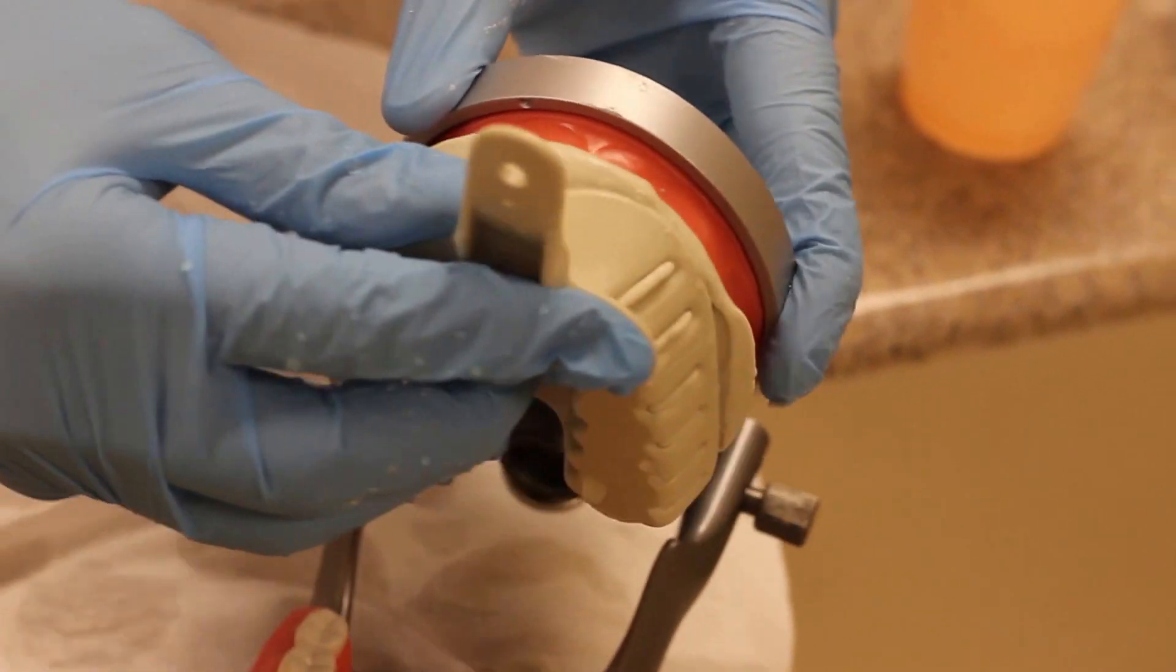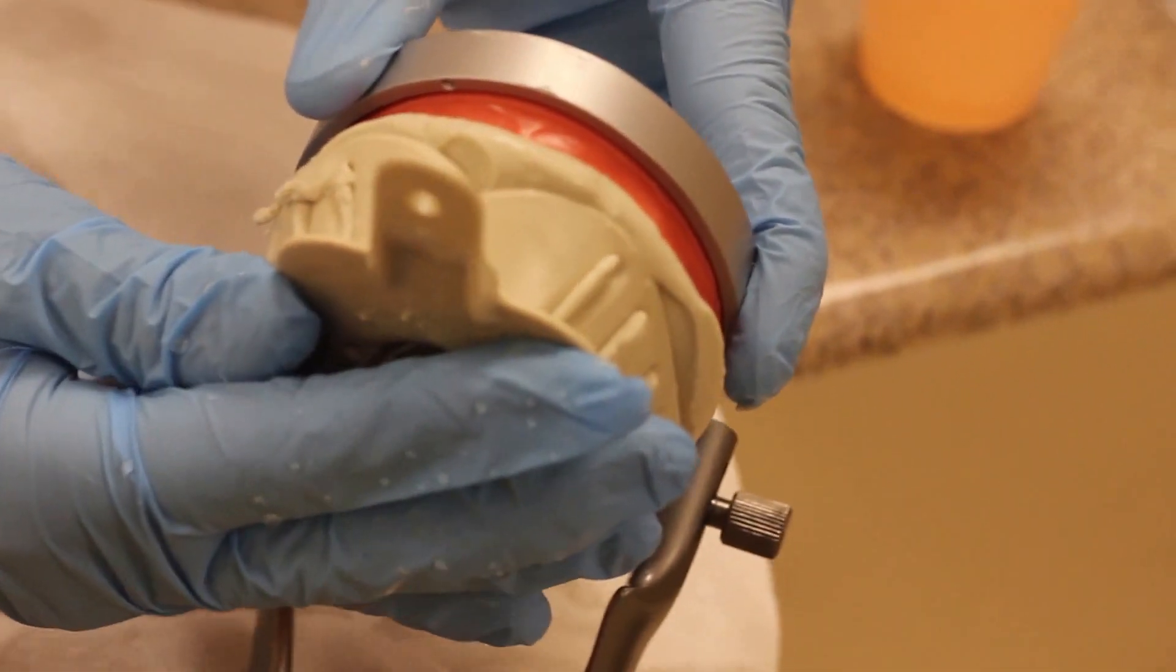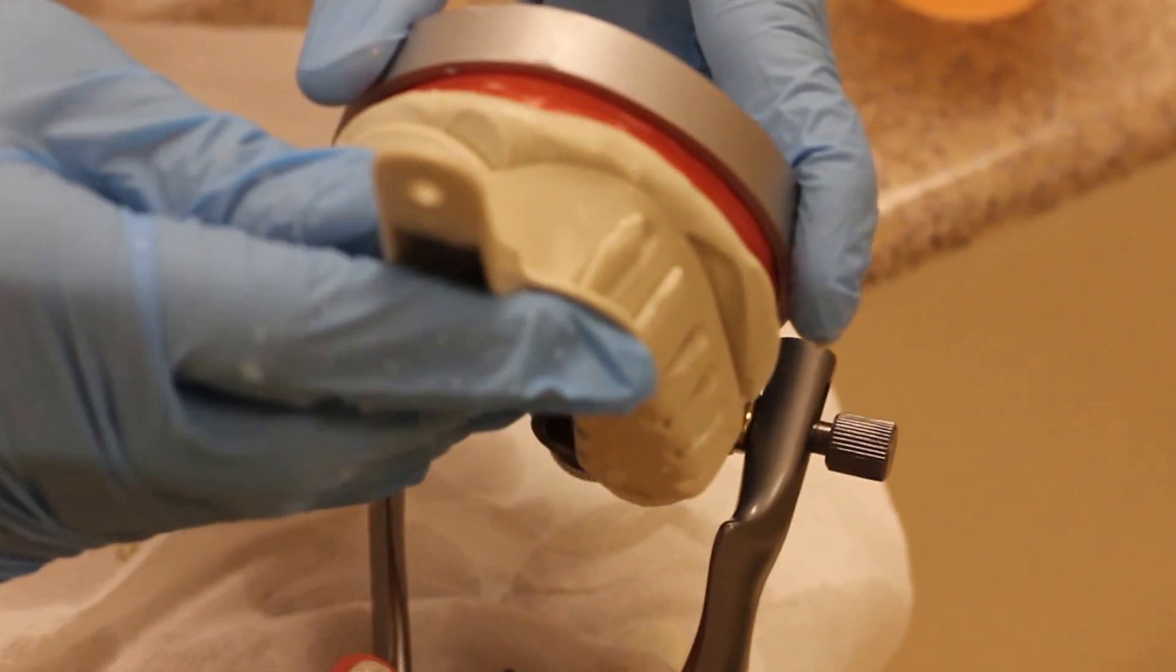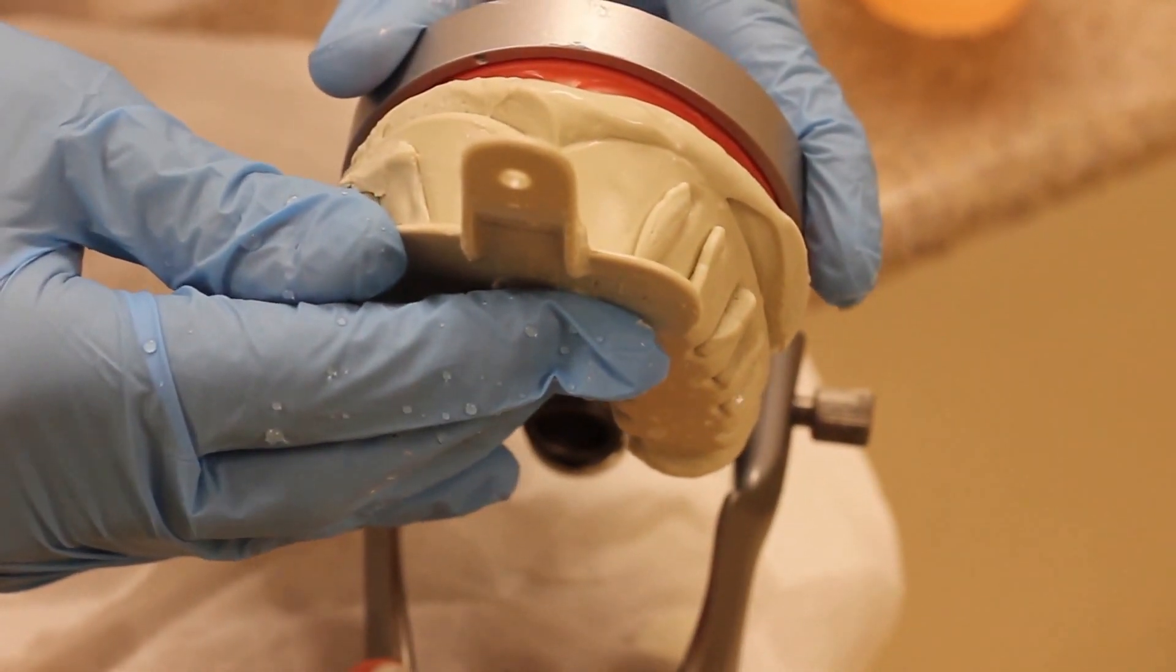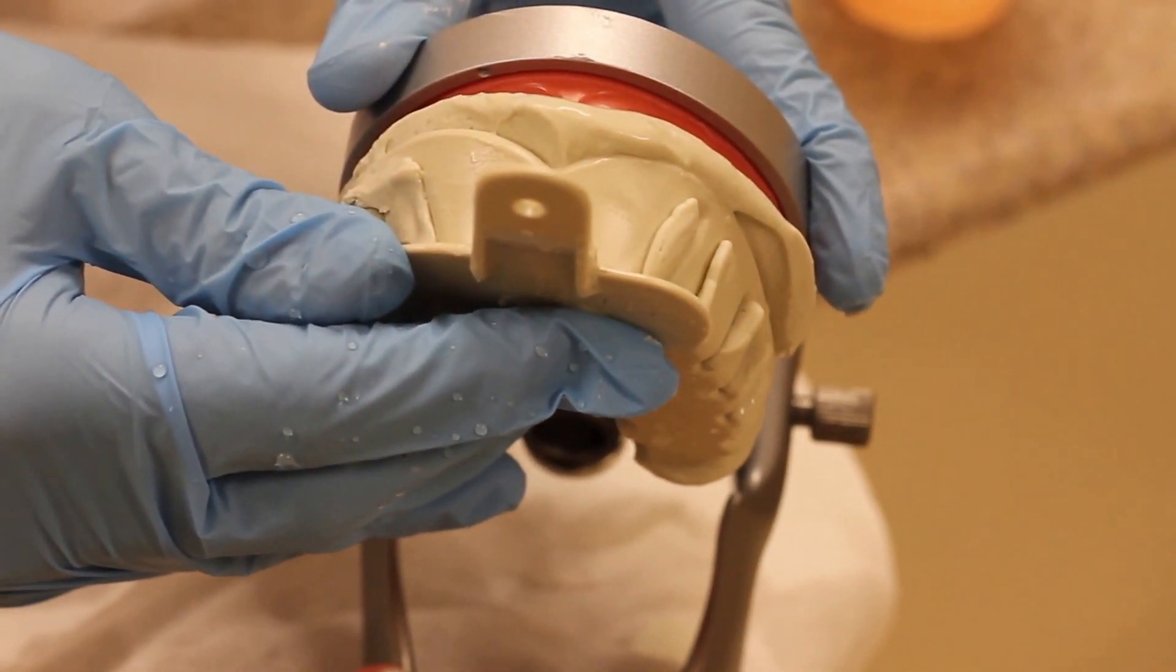And as I seat I like to give it a little bit of a wiggle back and forth because as you put a little strain on that material the alginate will tend to flow a little bit better. And I'll hold that in until it sets.